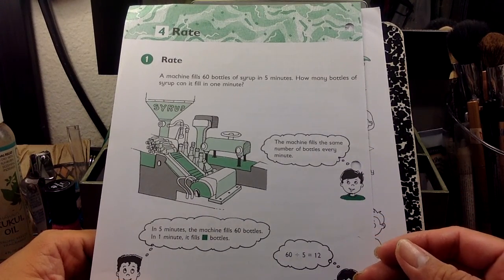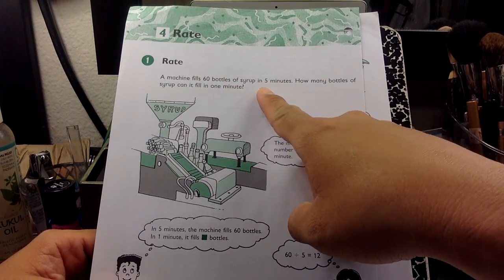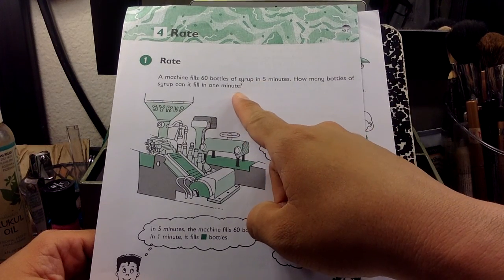When we talk about rates, we're talking about like a speed of something. So a machine fills up 60 bottles of syrup in five minutes. How many bottles of syrup can it fill up in one minute?